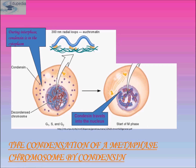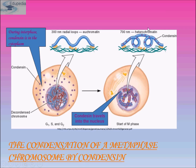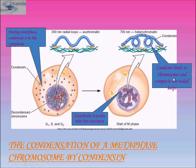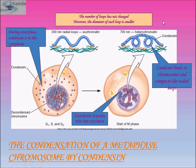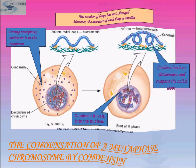Condensin travels into the nucleus and attaches to the decondensed chromosome to make it more compact. It gets converted into heterochromatin of about 700 nanometers in diameter, which has greater compaction than the euchromatin (300 nanometers). Condensin binds to the chromosome and compacts the radial loops — the number of loops has not changed, however, the diameter of each loop becomes smaller.